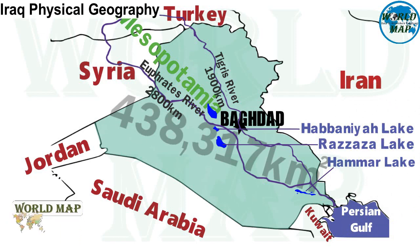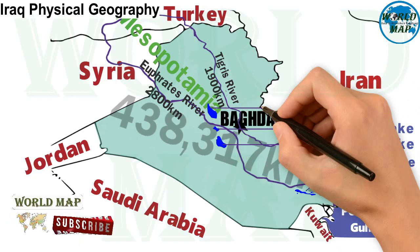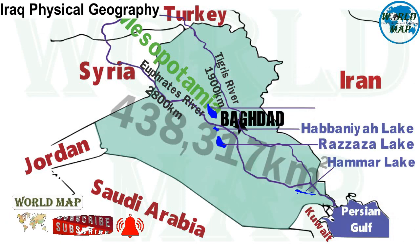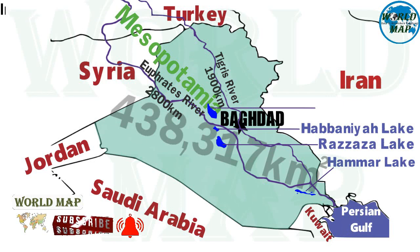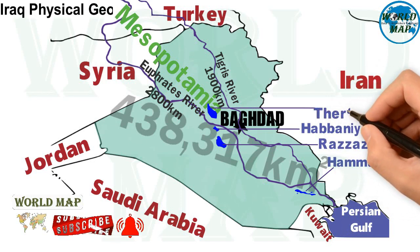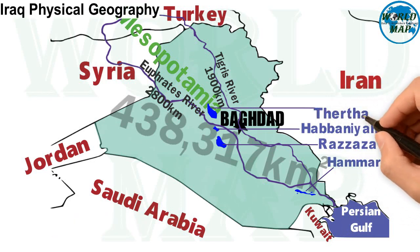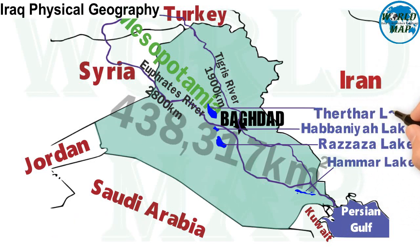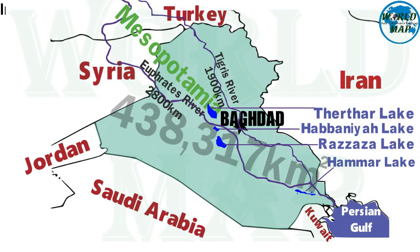Lake Dharthar is an artificial lake opened in 1956, situated 100 kilometers northwest of Baghdad between the Tigris and the Euphrates rivers.